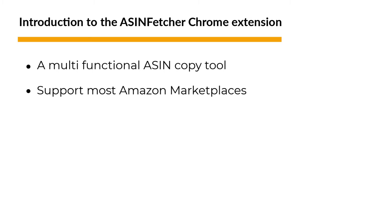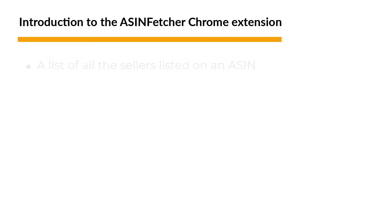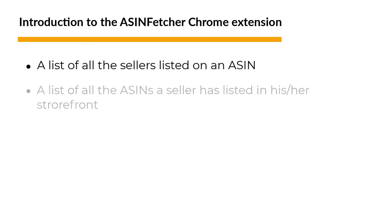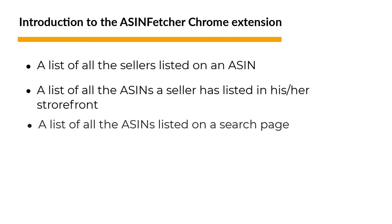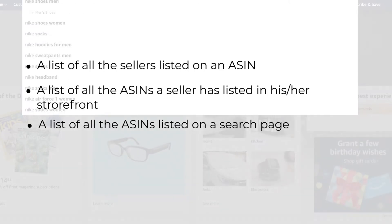ASIN Fetcher will allow you to copy the following: a list of all the sellers on an ASIN, a list of all the ASINs a seller has listed on their storefront, and a list of all the ASINs listed on a page.